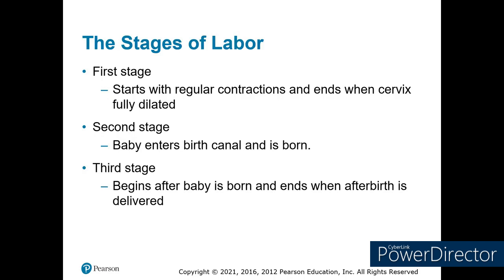The first stage of labor starts with regular contractions and ends with full cervical dilation. Once the cervix is dilated to at least 10 centimeters, the baby can come out. The second stage is when the baby enters the birth canal until delivery. The third stage is after the baby is born — resuscitation and cleaning of the baby — and then the afterbirth, when the placenta is delivered.